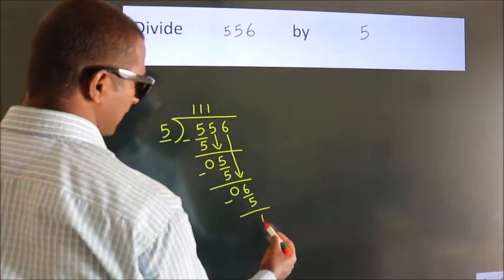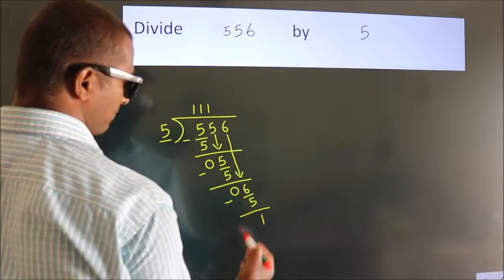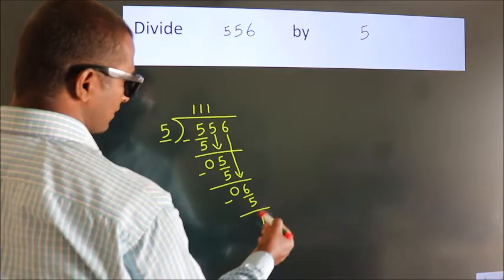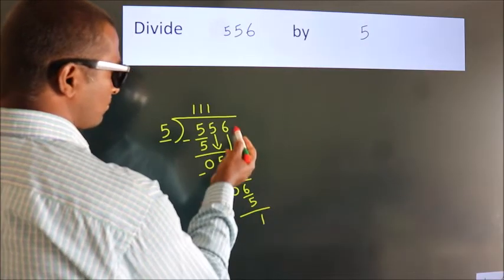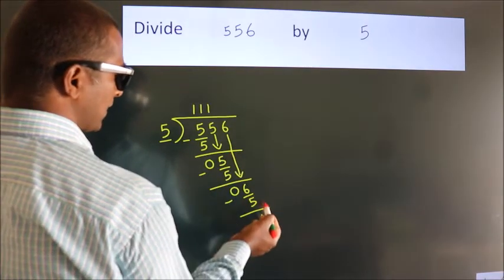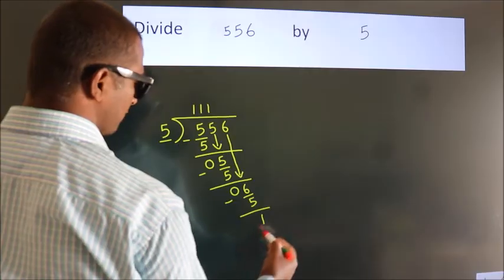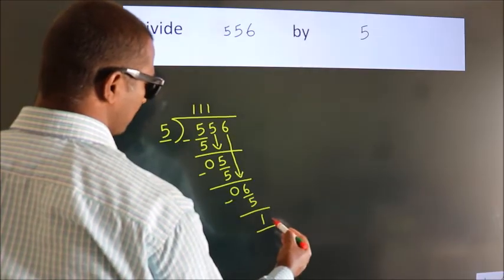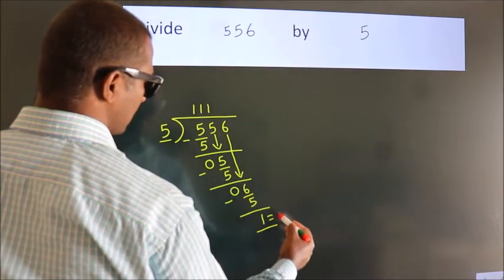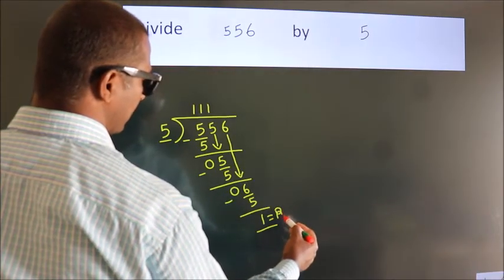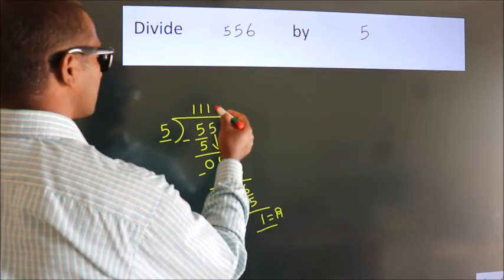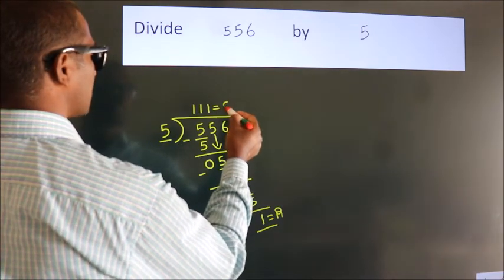We get 1. After this, there are no more numbers to bring down, so we stop here. This is our remainder. This is our quotient.